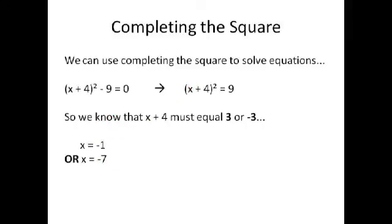We can actually use completing the square to solve equations. So say we've got our completed square here, (x plus 4)² minus 9 equals zero. We know that (x plus 4)² equals 9. So that x plus 4 has to equal either 3 because 3 squared is 9 or minus 3 because minus 3 squared is 9. So we know that x has got to be either minus 1 or minus 7 because either of those will add to give 3 or minus 3, and we'll get our lovely 9.